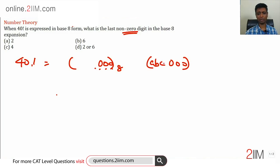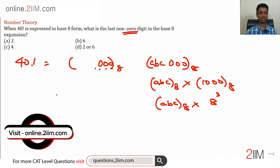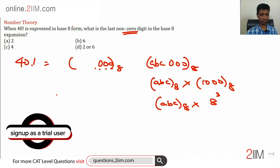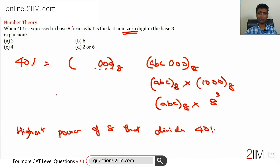If a base 8 number ends in three zeros, say ABC followed by three zeros in base 8, that means ABC base 8 multiplied by 1000 base 8, or ABC base 8 times 8 cubed. In other words, we need to find the highest power of 8 that divides 40 factorial. Once we find that, we'll figure out how many trailing zeros there are, and then move on to finding the last non-zero digit.